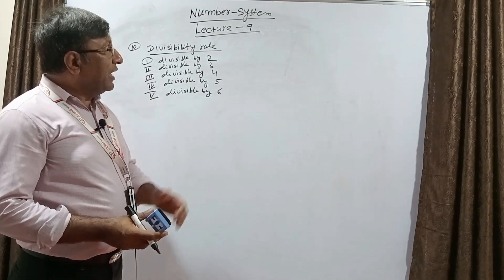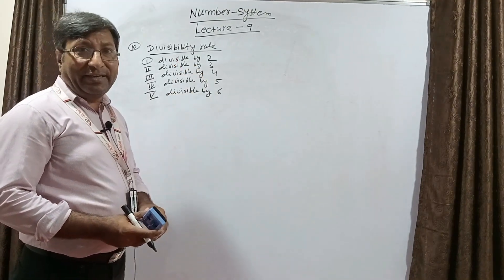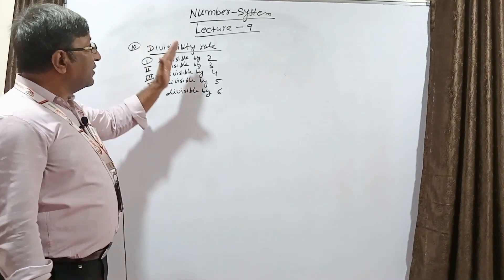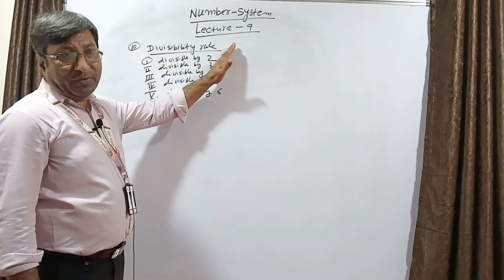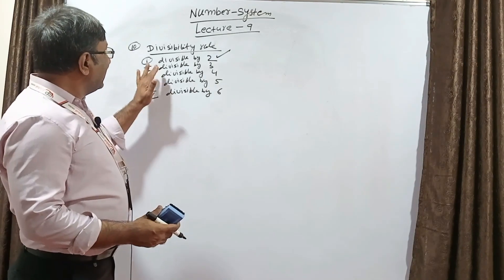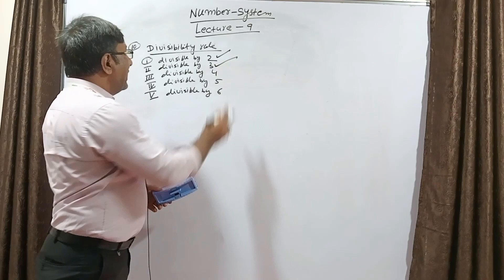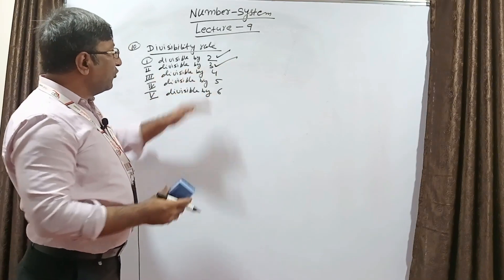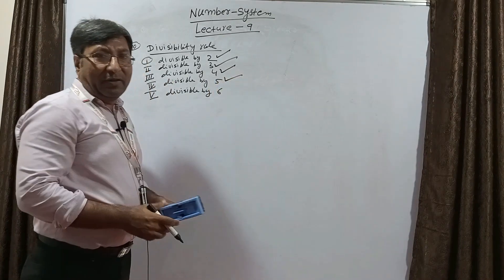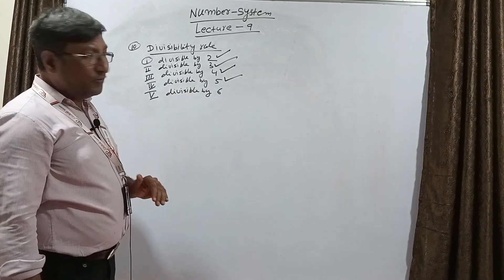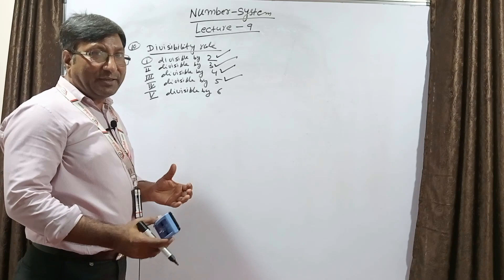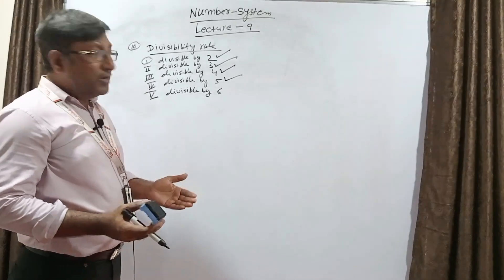Hello everyone, today I'm going for lecture number 9 in number system. In lecture 8 we covered divisibility rules: divisible by 2, divisible by 3, divisible by 4, and divisible by 5. Today in lecture number 9 we are starting divisible by 6. So, any number is given — how can we check if this number is divisible by 6?